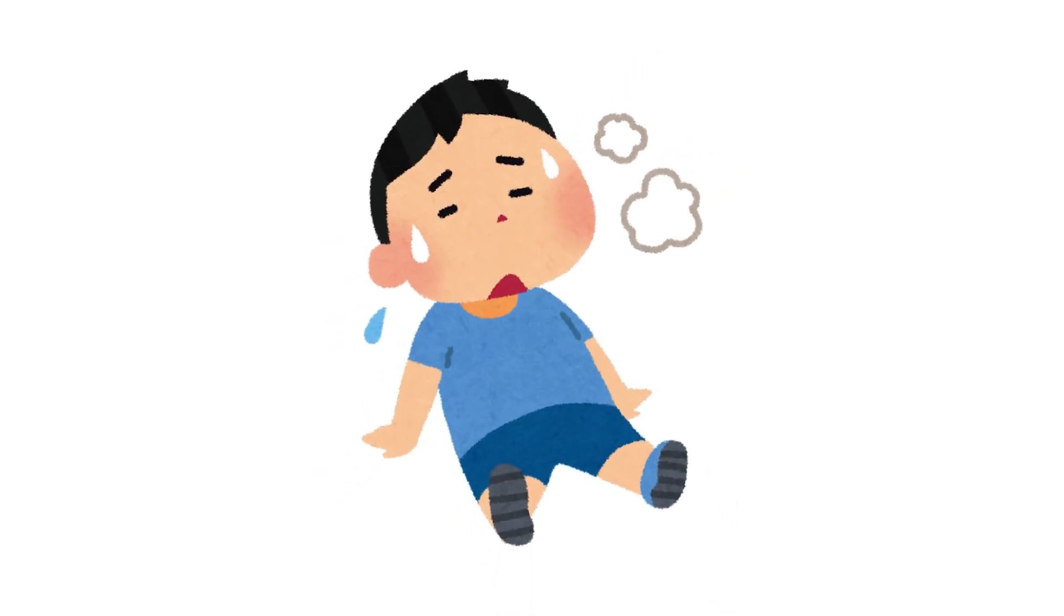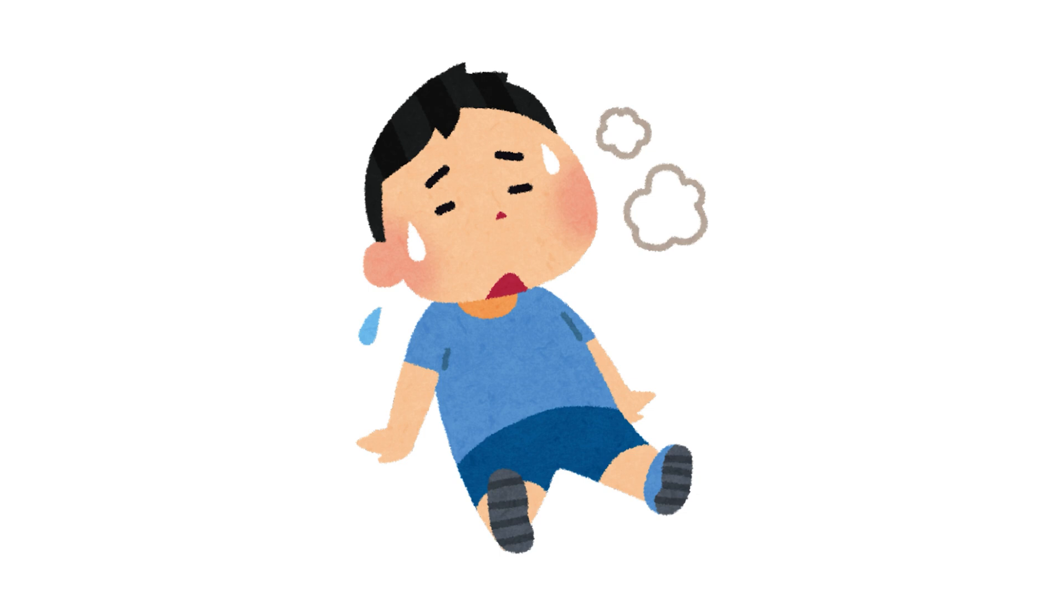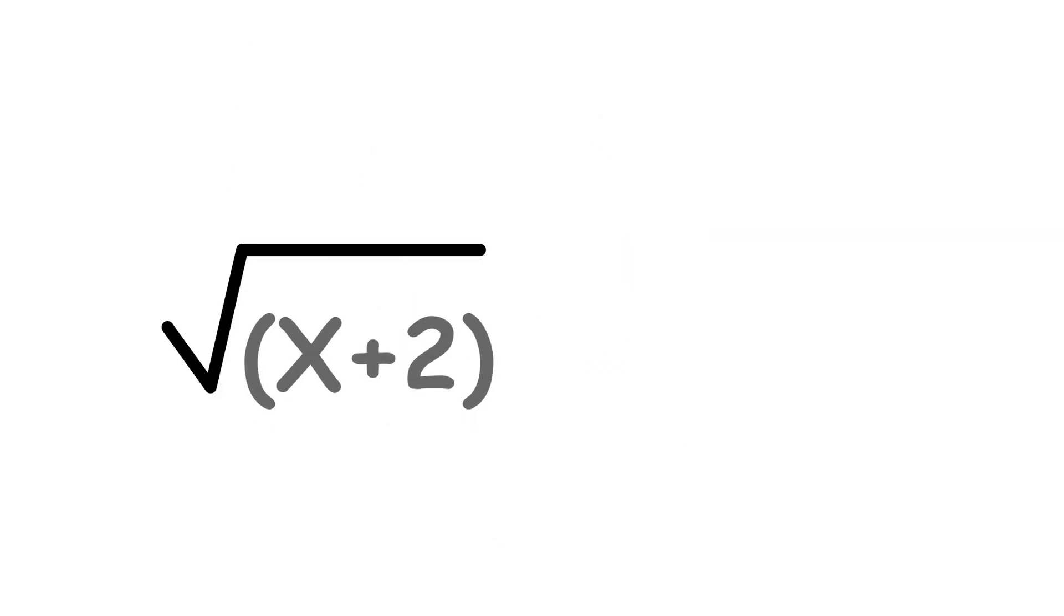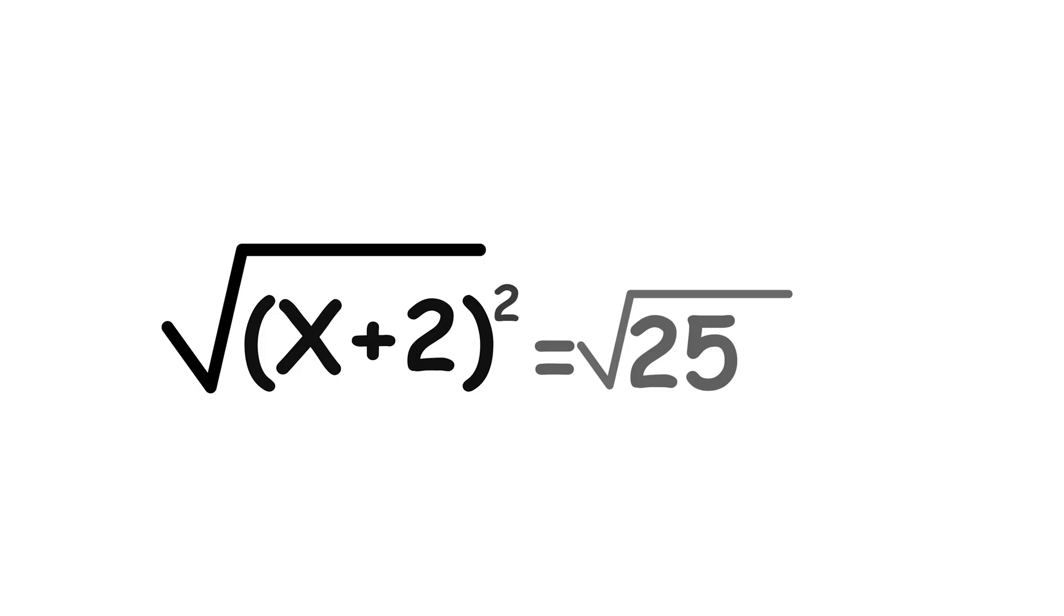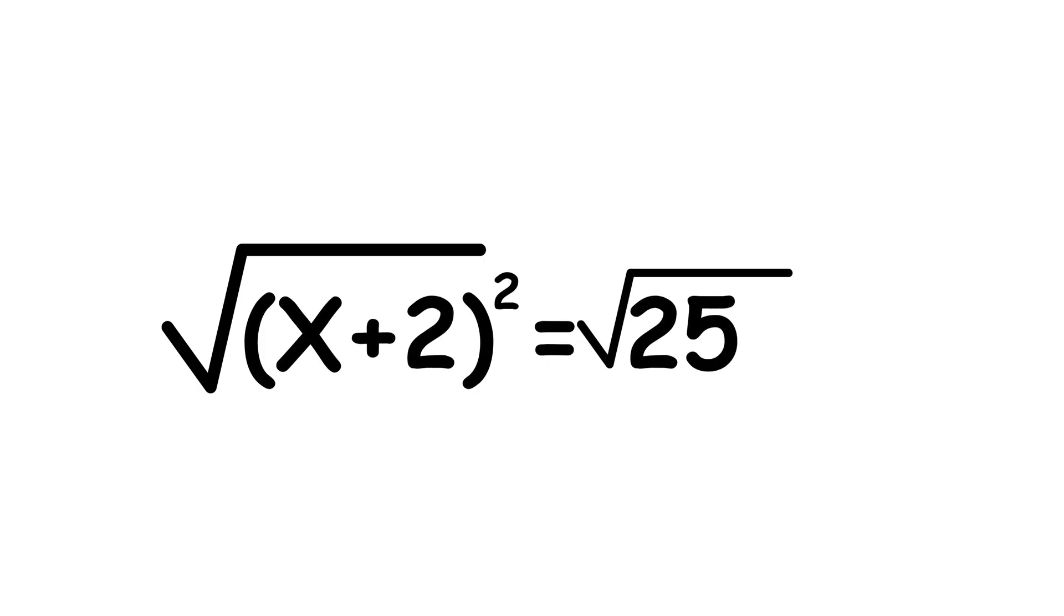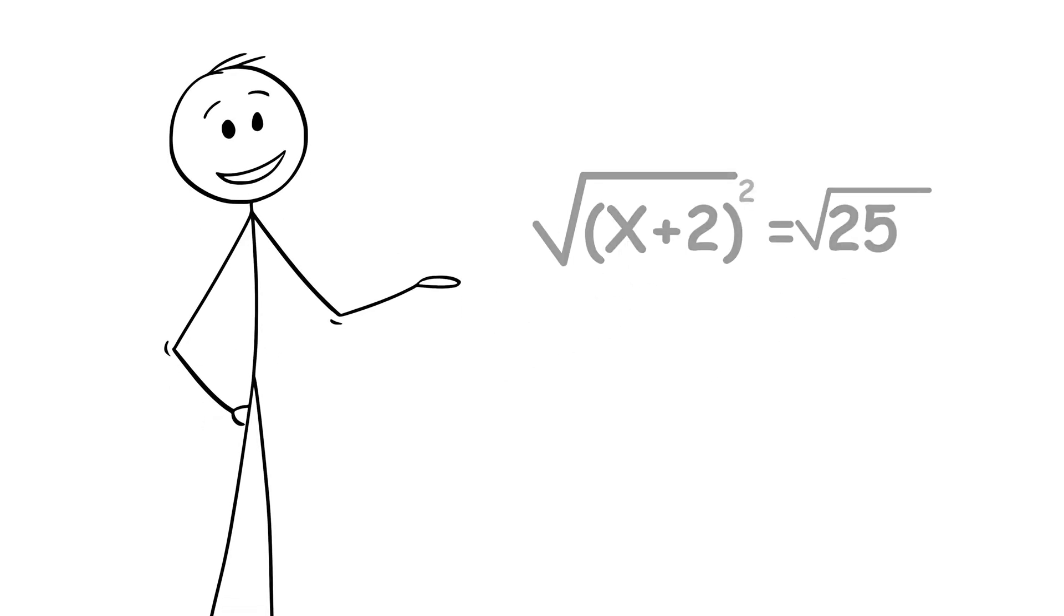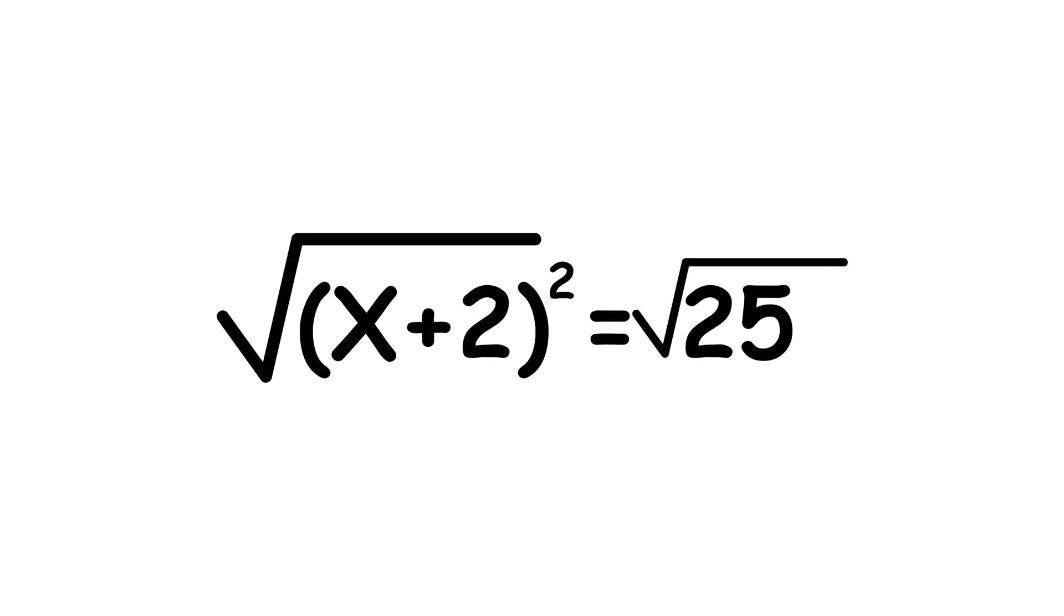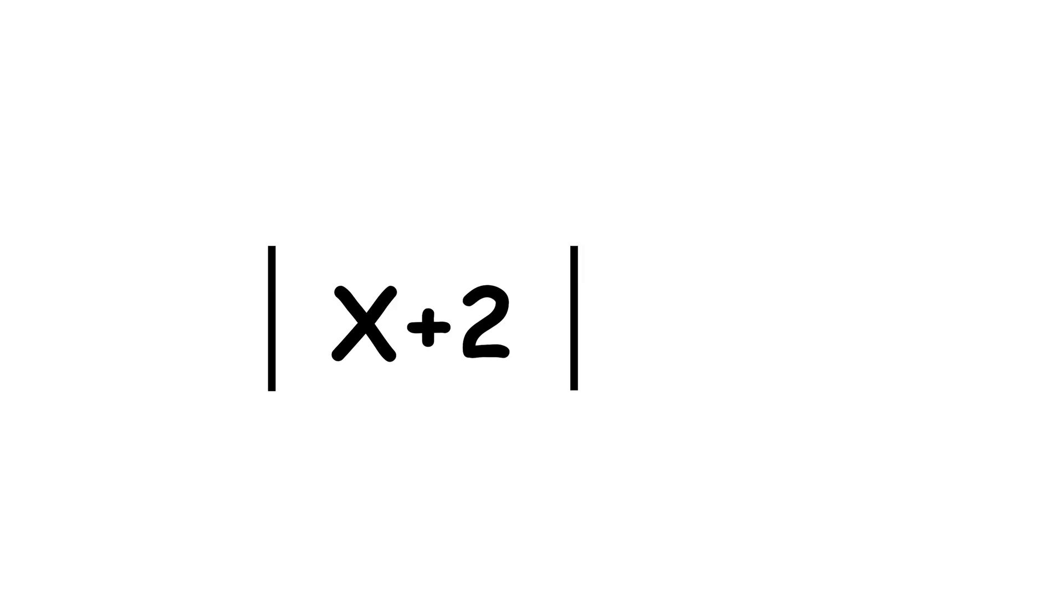Now, we solve the equation similarly to before. Take the square root on both sides. Square root of quantity x plus 2 squared equals square root 25. Everything here is a real number, including the square root of positive 25. So, we can change the square root of a square into an absolute value. Absolute value of x plus 2 equals 5.